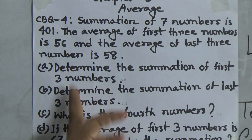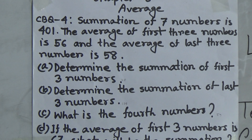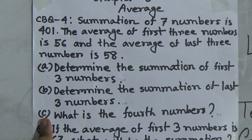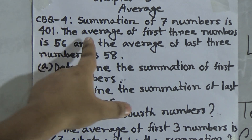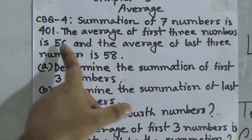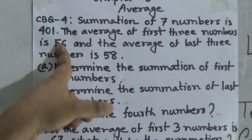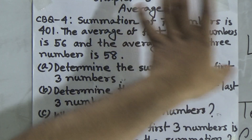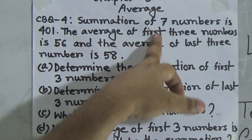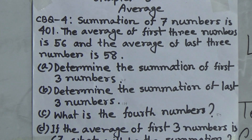My dear student, questions A, B and D are of the same type and only C is different, but it is also easy. For question A — determine the summation of the first three numbers — notice that the average of the first three numbers is given as 56 and the number of data is 3. So we multiply 56 by 3 and we get the summation of the first three numbers. So easy.